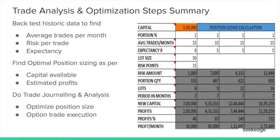We need to backtest the idea based on historic data for that particular instrument and exchange. Based on how it would have performed historically — how many trades per month, how much risk per trade, what is the expectancy — the performance of that strategy is derived initially from the backtest. We then look at that and position size it properly.